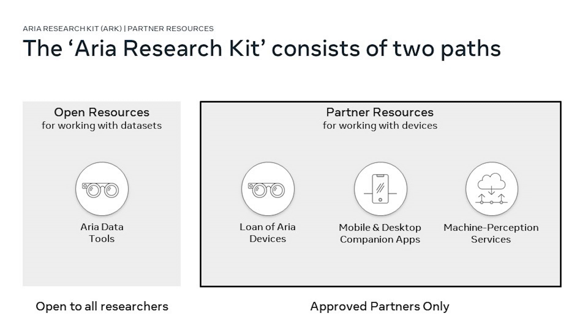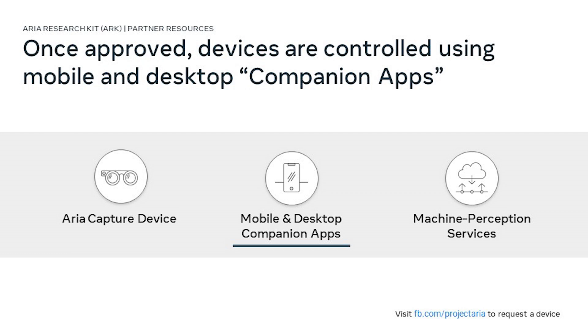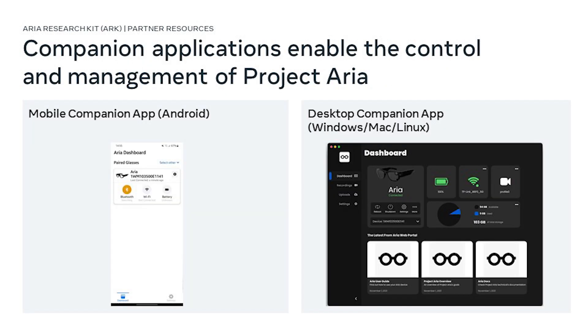In this ARIA Research Kit there is also a second offering for academic partners. If you want to capture your own data, you'll want your own ARIA devices. You can subscribe and send your request to Project ARIA at fb.com/projectaria, where you'll find more information about Project ARIA, the pilot dataset, and the partnership offering for academics. Once your request is approved, you also get access to a companion app for mobile and desktop.